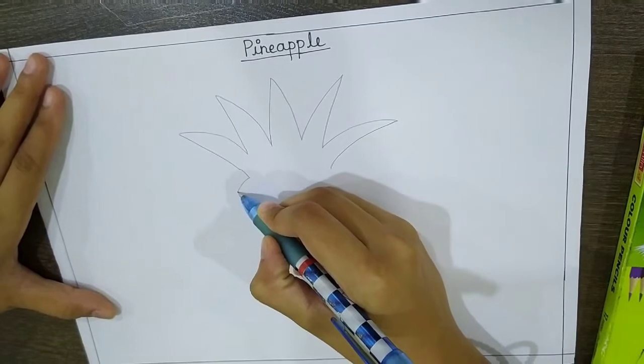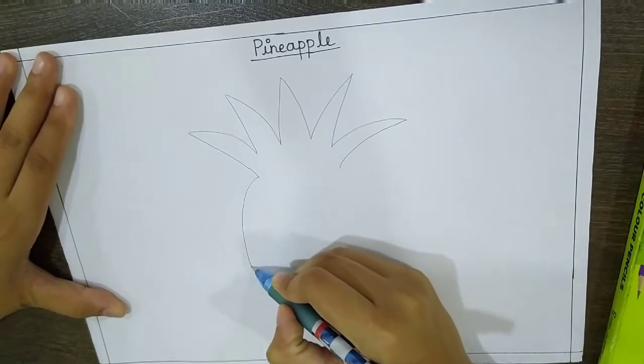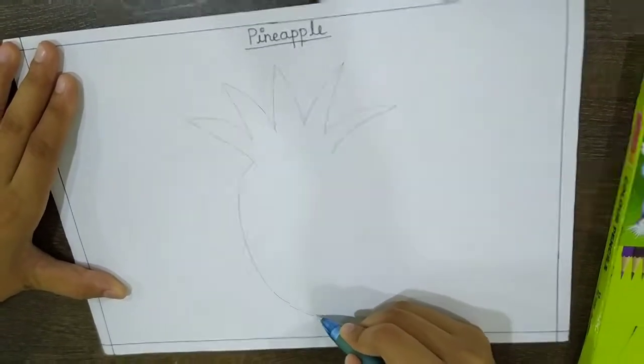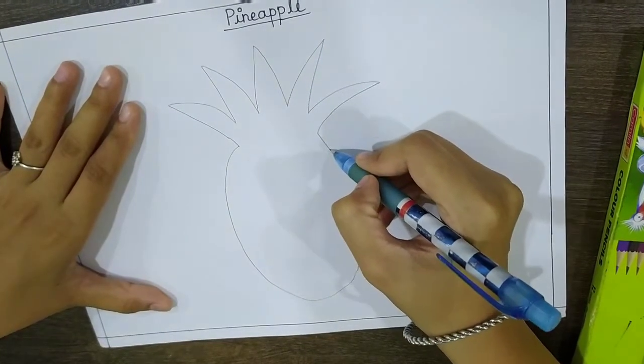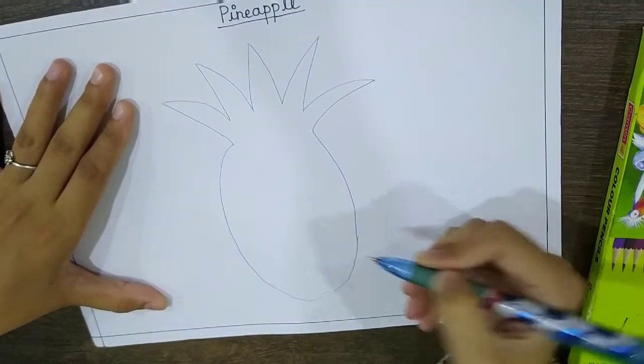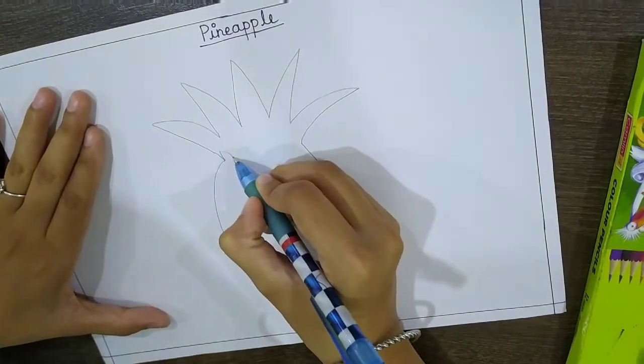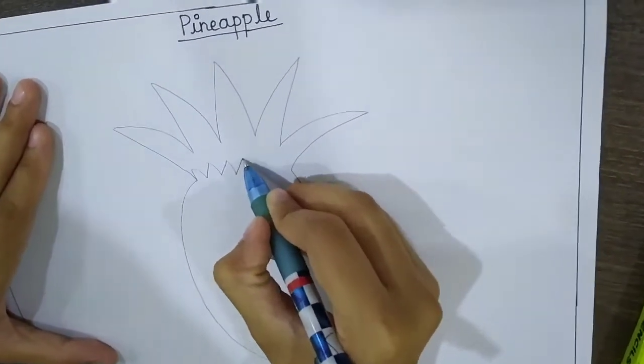Let's draw an oval, a half oval. This way. Okay, now one more zigzag.